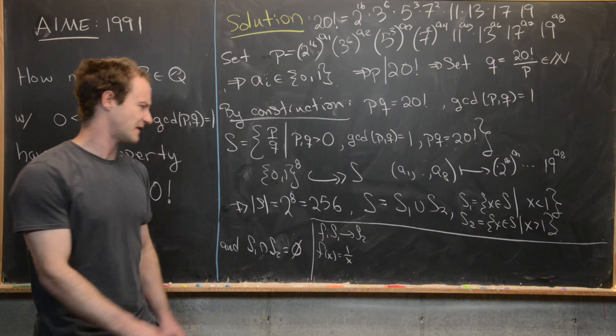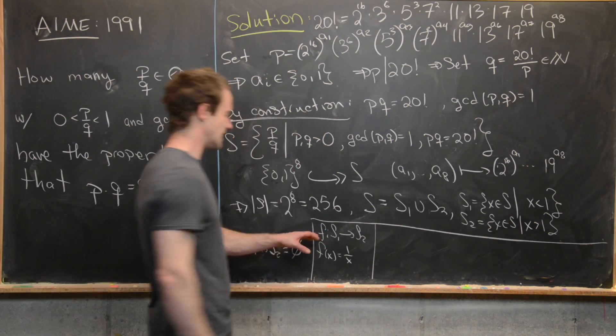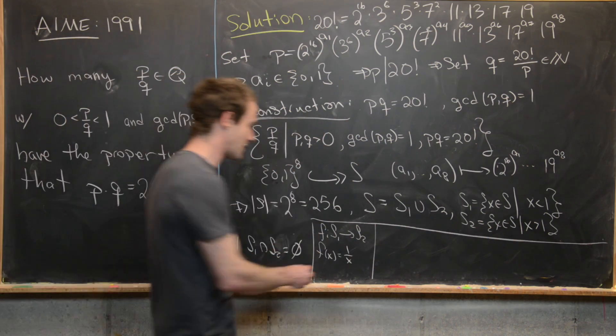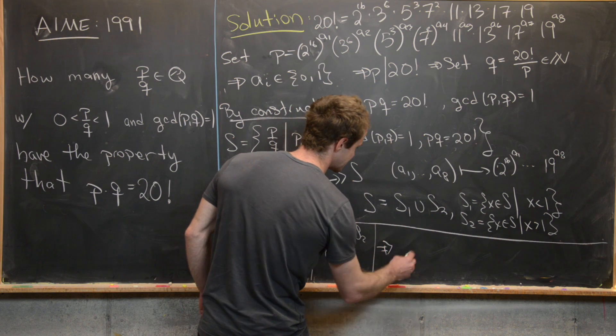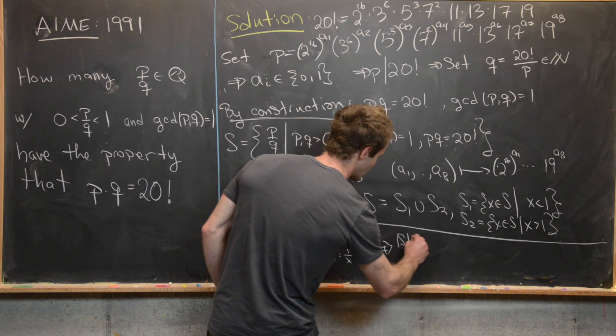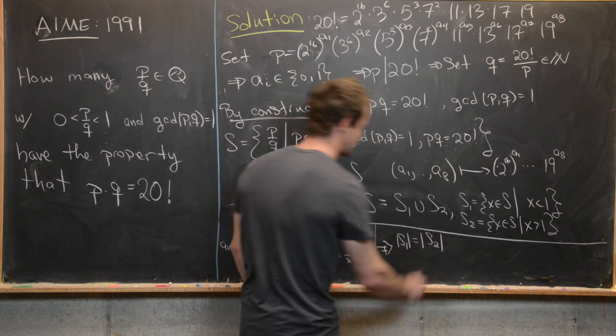So I'll leave it to you guys to check that this is a bijection, but if this is a bijective map, then what that tells us is that the size of S1 equals the size of S2.